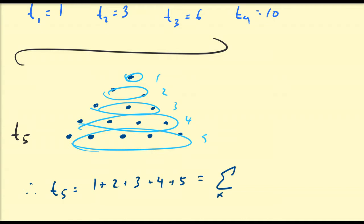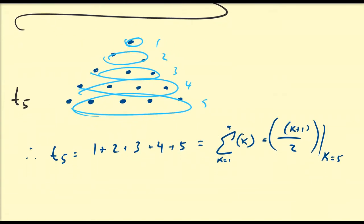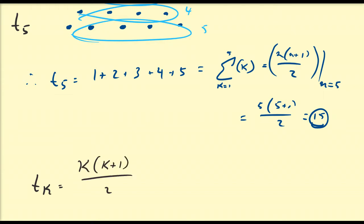In summation notation, that's the sum from k equals 1 to 5 of k. In general, we know a formula for this: k times k plus 1 divided by 2. Evaluating at n equals 5, that's 5 times 6 over 2, or 30 divided by 2, which is 15. So our claim is that tk equals k times k plus 1 all divided by 2.